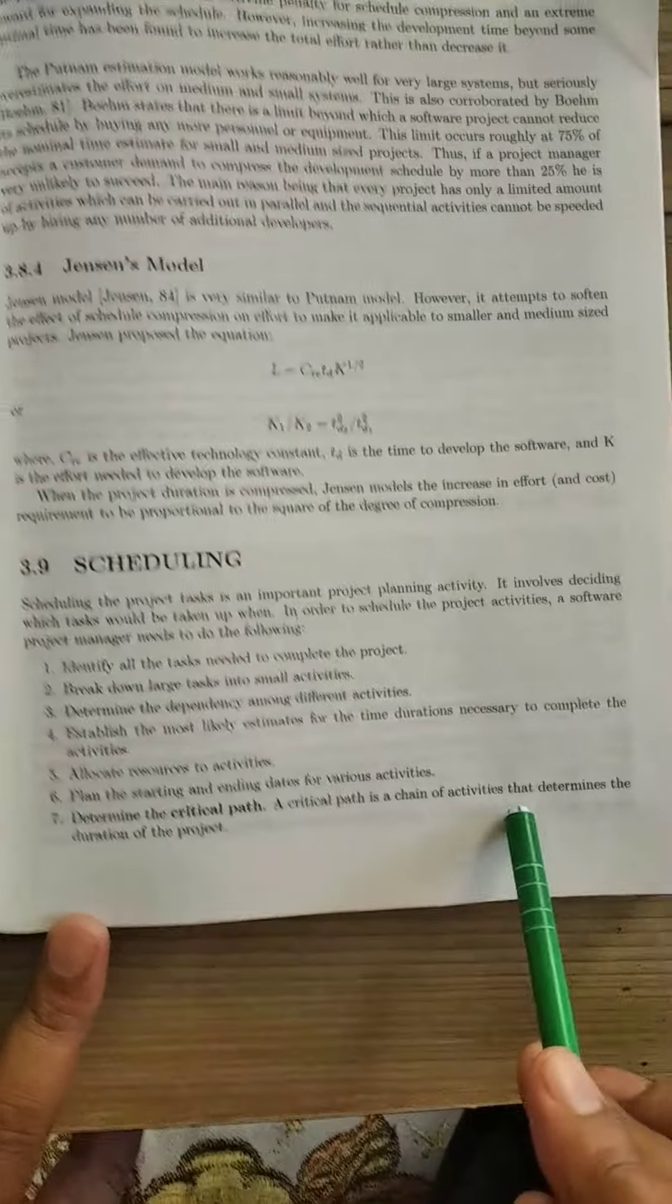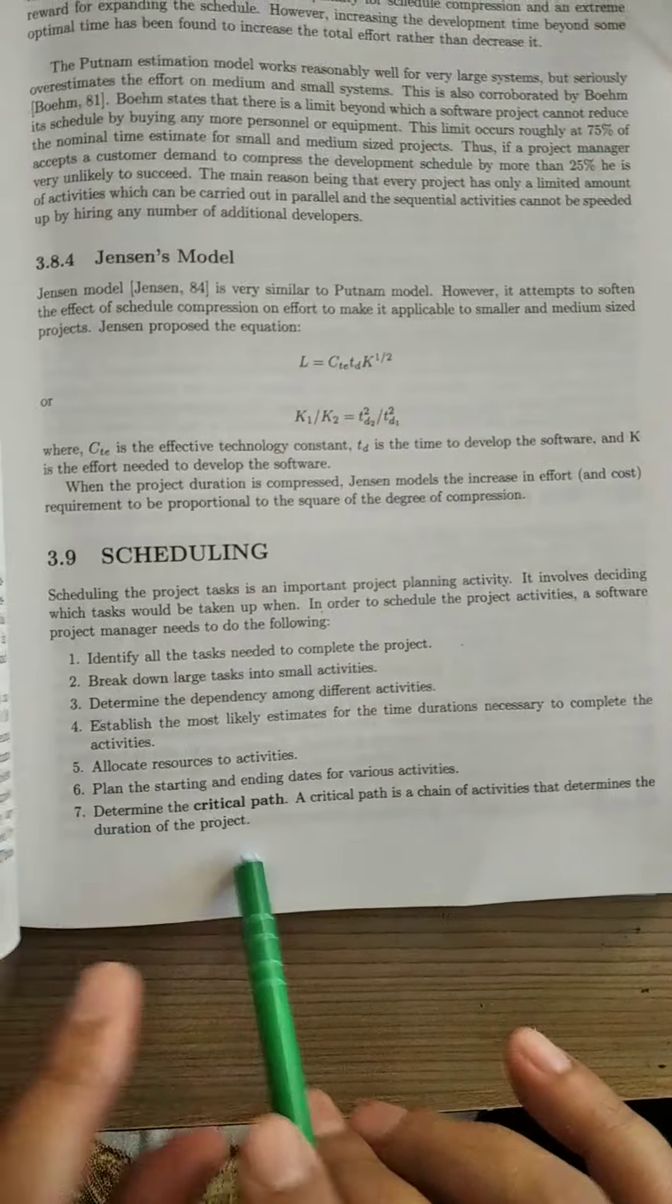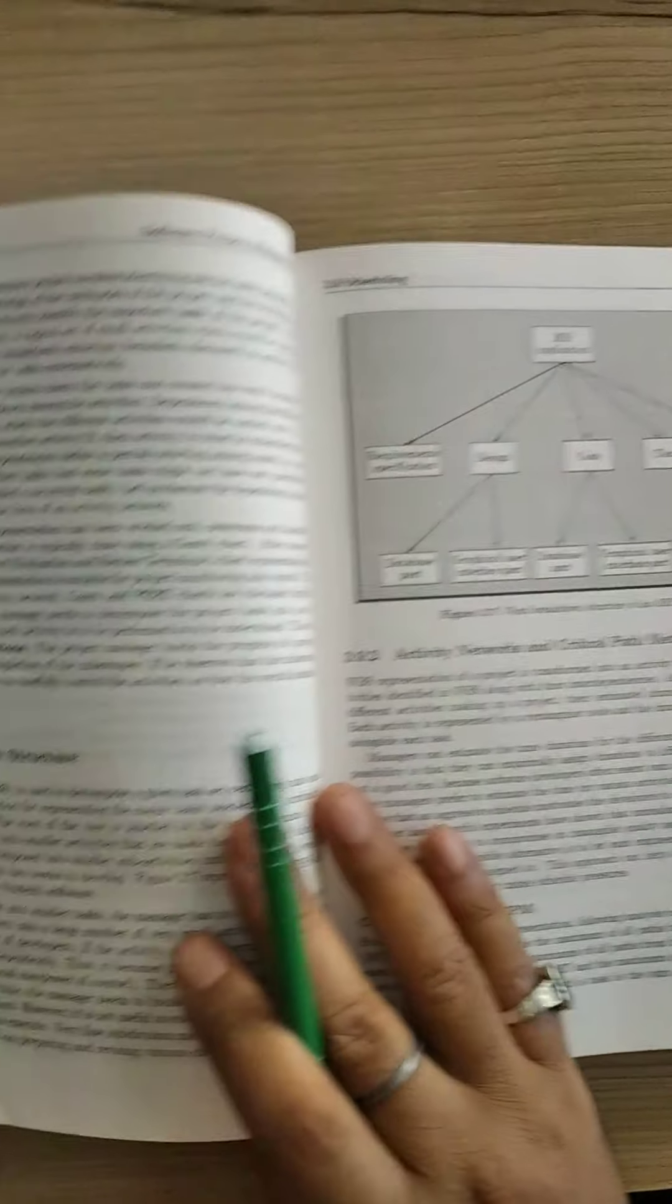A critical path is a chain of activities that determines the duration of the project. There are different tools and methods by which we can schedule the project.